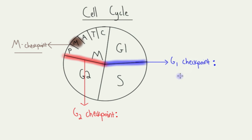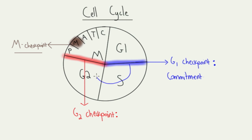Starting with the G1, the purpose of this one is — this is what I call the commitment checkpoint. This is the one that determines whether or not the cell continues through the entire cell cycle. Once you're here, your job is to go all the way around as a cell. There's no stopping in S, stopping in G2, or stopping in M. You pass this one, you go all the way through.